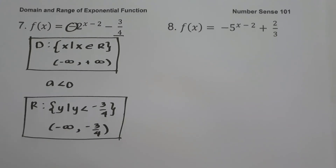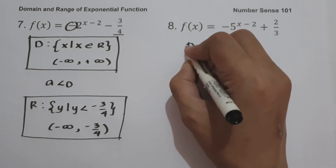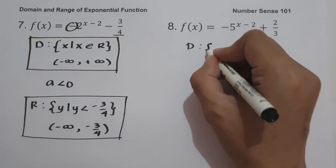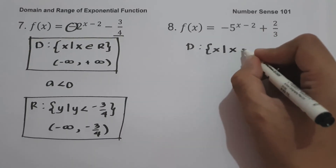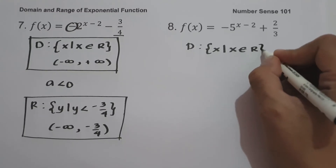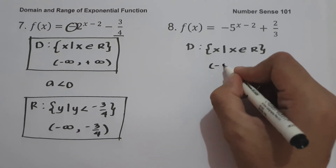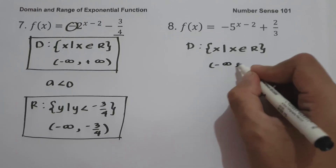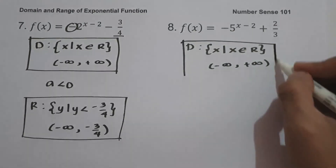On our last example: f(x) = negative 5 raised to x minus 2 plus 2 over 3. The domain is the set of x values such that x is the set of all real numbers, or in interval notation, from negative infinity up to positive infinity.